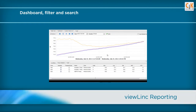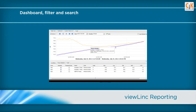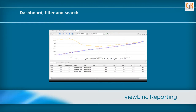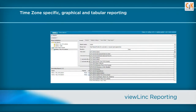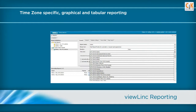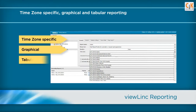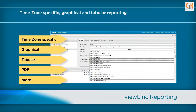Customization features include interactive data points in graphs and the ability to configure trending durations and locations. ViewLink reports are unique because they are time zone specific. Users can create reports in their own time zone or the time zone of monitored locations. Reports can be delivered in several formats including graphical, tabular, spreadsheet and PDF.